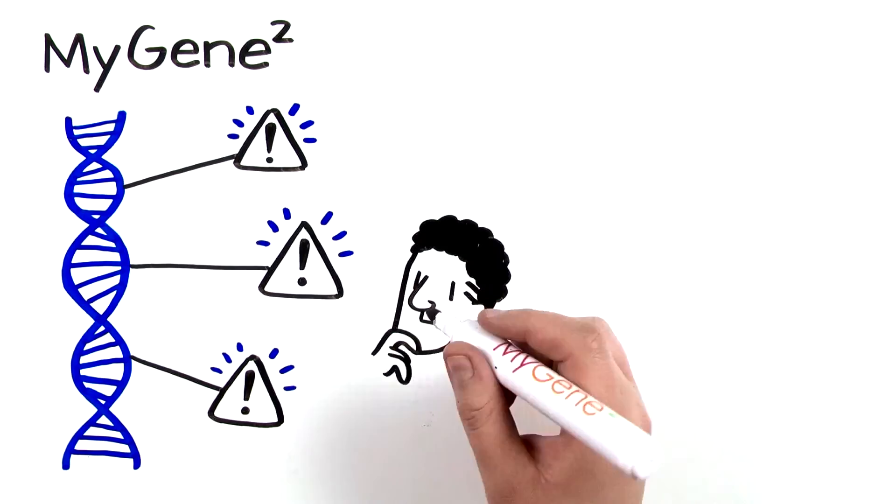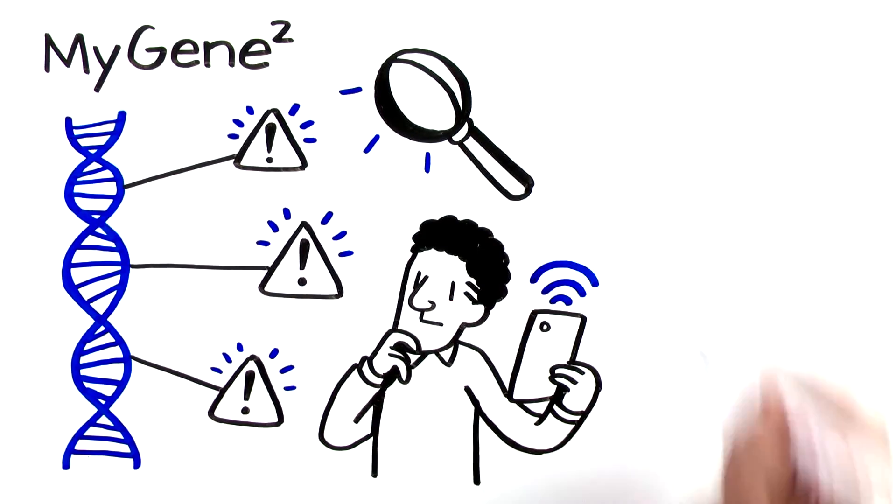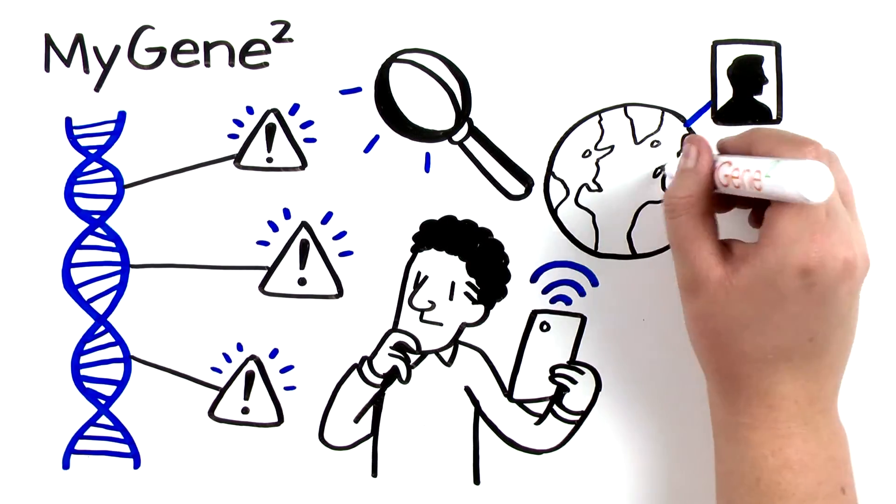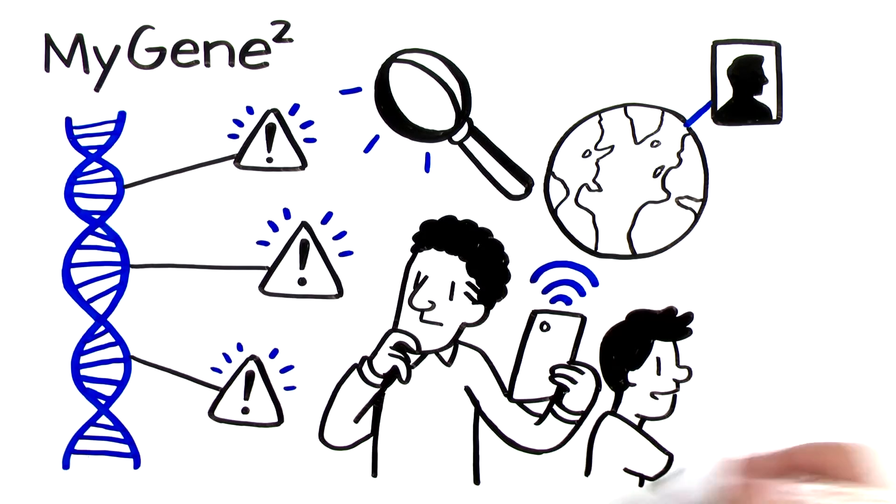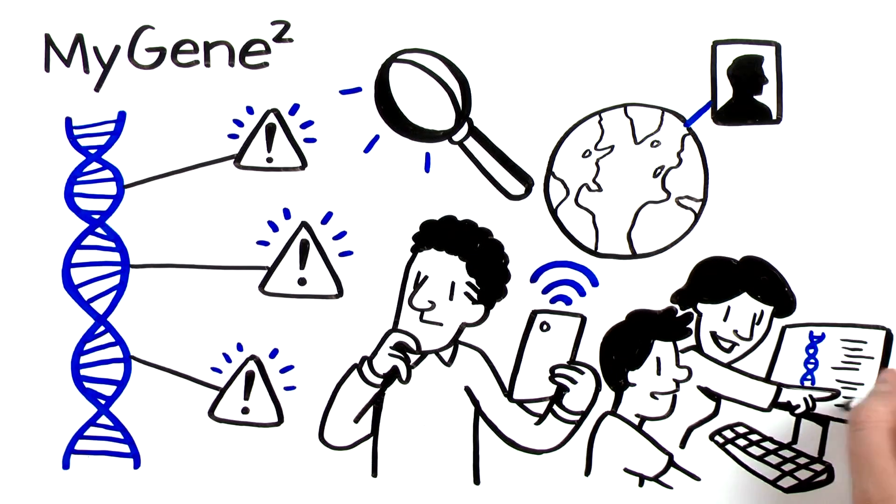Users can search the data in MyGene2 on their own, be automatically notified of discoveries, and network with other users, even if they are on opposite sides of the world. MyGene2 also helps families get their own sequence data and explore it using simple graphical tools.